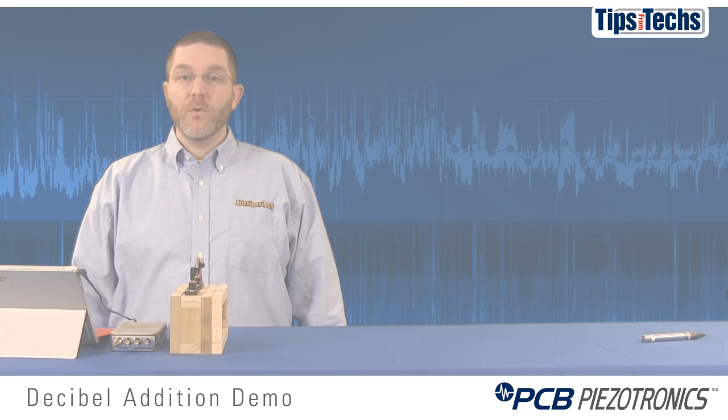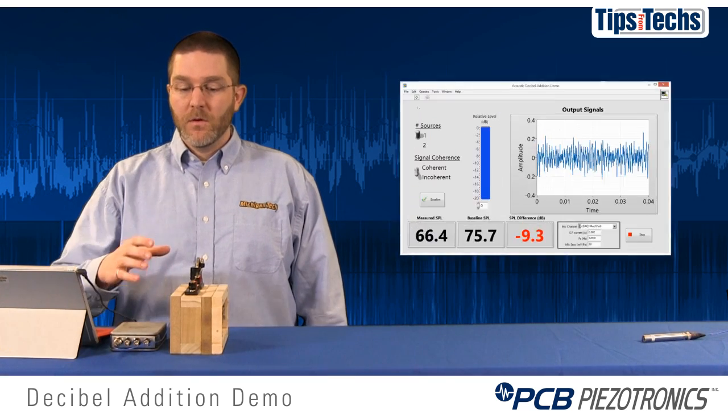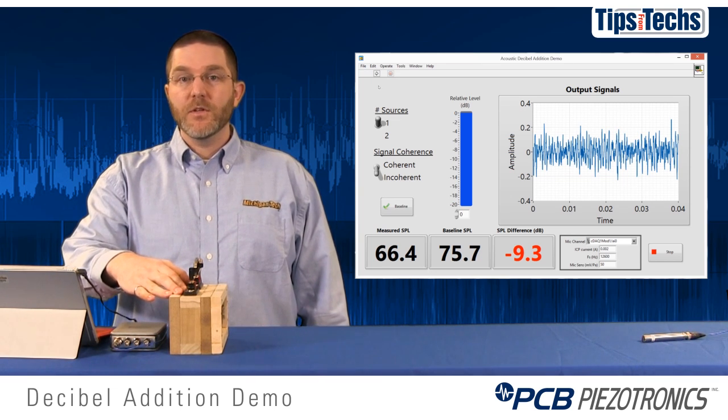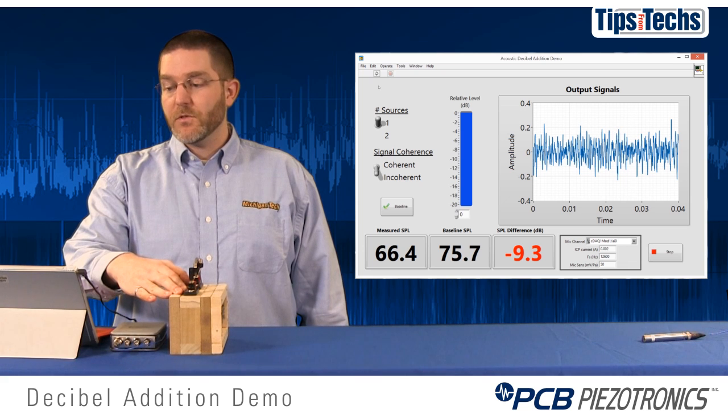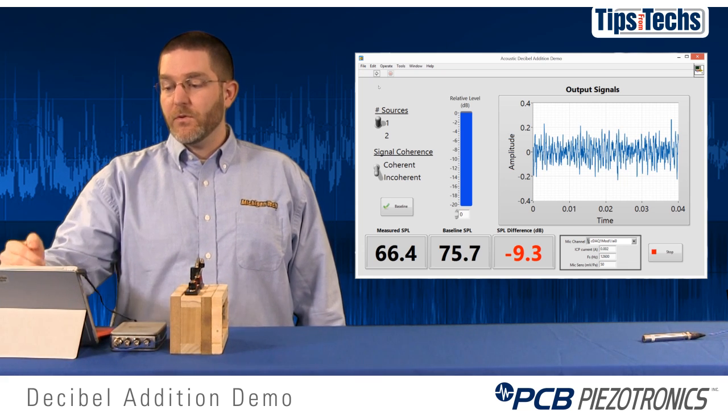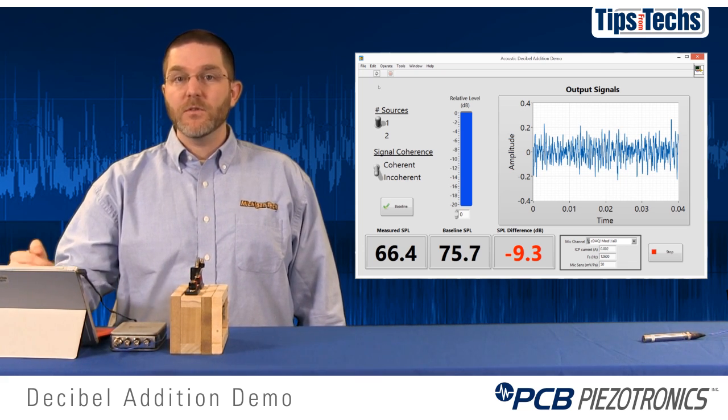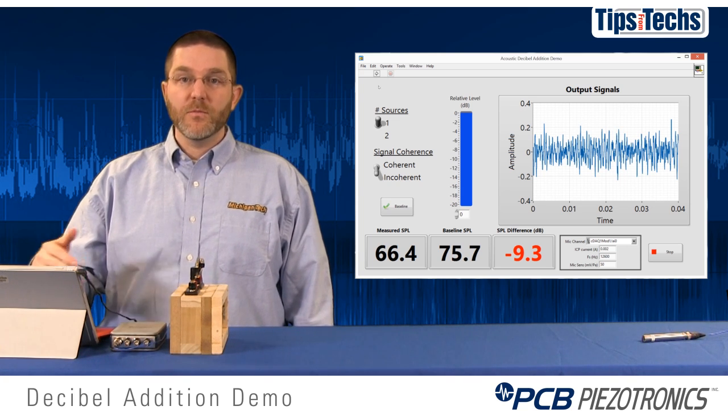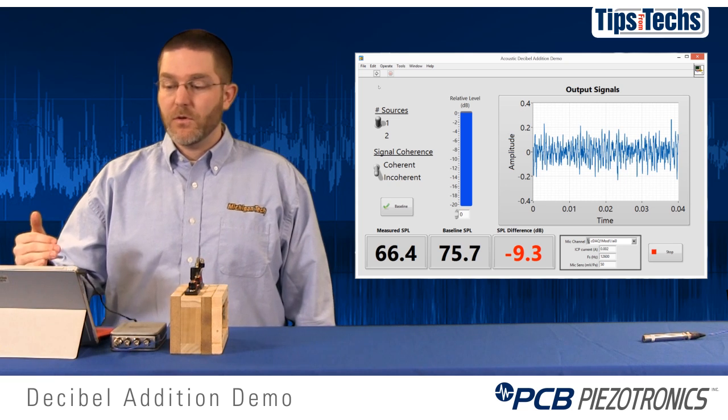To demonstrate the points from the last slide we will drive both of these speakers with incoherent noise and then using the vertical slider bar you see on the screen will decrease the relative level of the second speaker to the first speaker and you'll watch the SPL difference decrease from the 3 dB we'd expect when they're the same level down to zero.